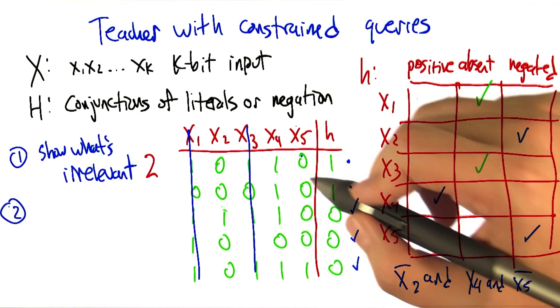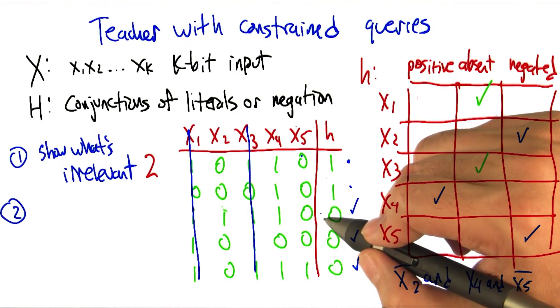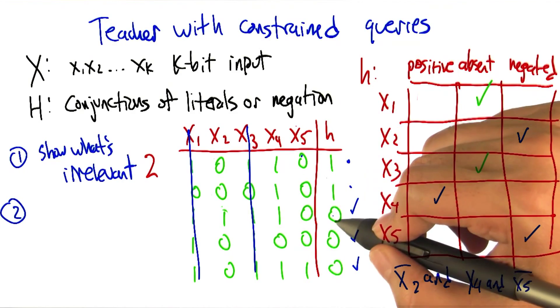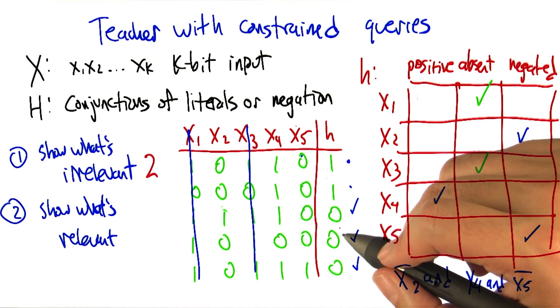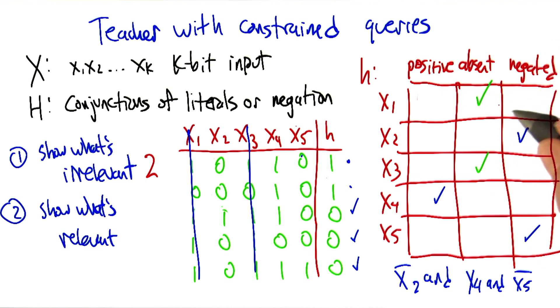All right, and then I have to show you that each of the remaining variables is relevant by flipping it and showing you that the answer is zero. And how many questions do I need to do for that? Three. Yeah, three in this case, because there were three variables that were used in the formula. What's the most it could be? Well, k, because all of them could be relevant.